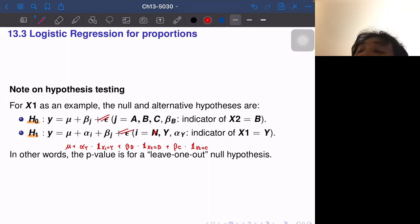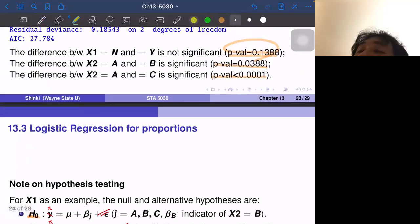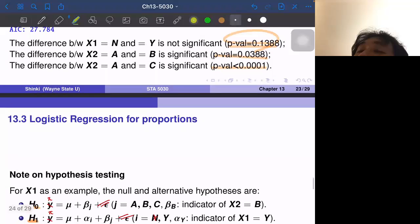So this actually the epsilon isn't really correct in this context, but the probability, probability of Y equals one. So this maybe should be pi. So this is the alternative hypothesis and the null hypothesis is alternative less this term. So just leave one out hypothesis test. So alpha Y is not significant. That means that if we know the information of X2, then X1 does not really matter. So that is the correct interpretation of this P value.